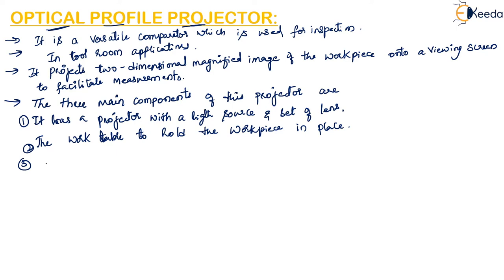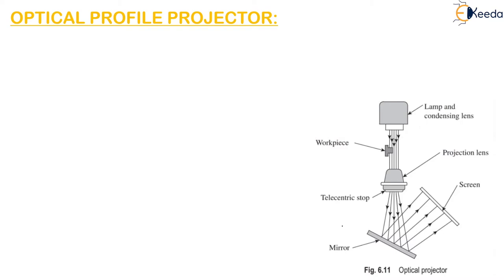From this figure we can see the construction of this profile projector — it has various parts. The workpiece which has to be inspected is mounted on a table such that it is in line with the light beam coming from the light source. This workpiece must be placed so that the light is passing on it, in line with the light beam coming from the lamp.